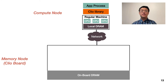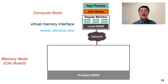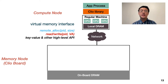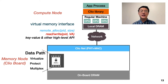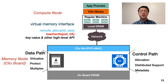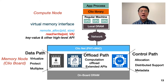We present Clio boards, the real hardware-based disaggregated memory boards. Clio boards expose a virtual memory interface to applications, and each application has a separate virtual memory space. At the compute node, Clio's client library provides metadata and data interfaces to applications for accessing remote disaggregated memory. Clio also supports extended APIs including key-value store and pointer tracing. At the memory node, Clio boards are designed to satisfy all disaggregated memory requirements, with a thin customized network stack, ASIC-based fast data paths, SOC-based control paths, and a reconfigurable extended path.